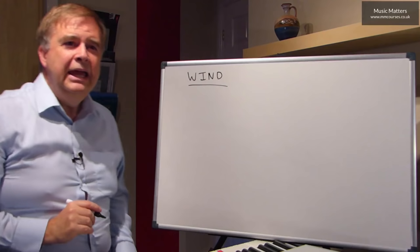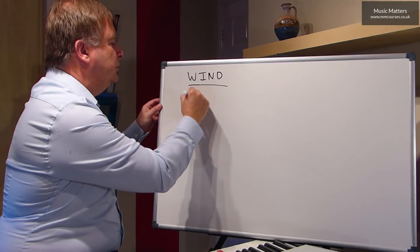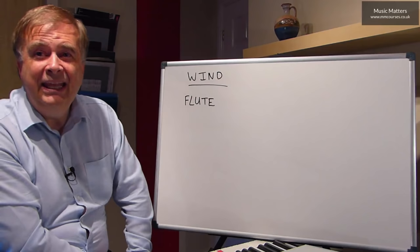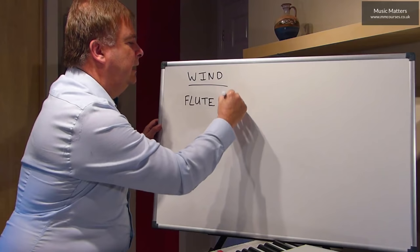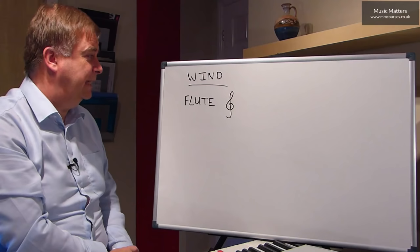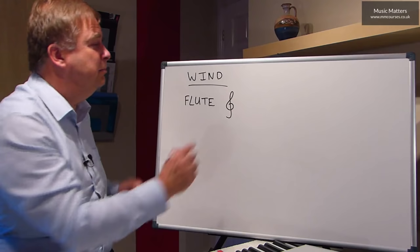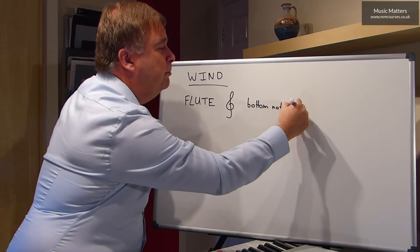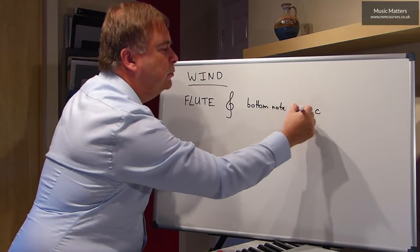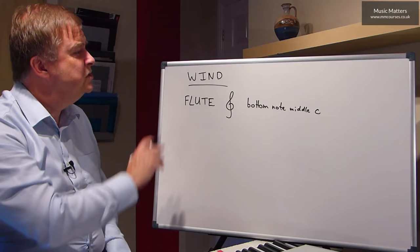The soprano instrument in the woodwind family is the flute. You'll be relieved to hear that the flute is a non-transposing instrument, so it plays at concert pitch — if it reads a C, it sounds a C. And the flute reads in the treble clef. One thing worth knowing about the flute is that the bottom note it can play is middle C. You need to remember that when writing a melody for a flute, because it can be tempting to write notes below middle C, but that would be impossible.